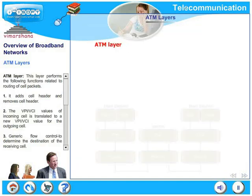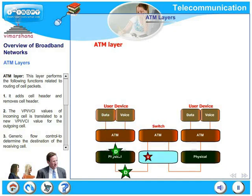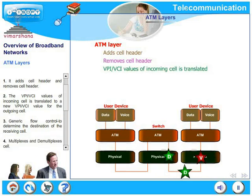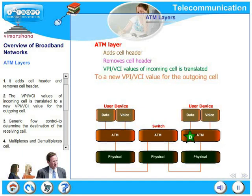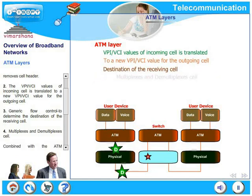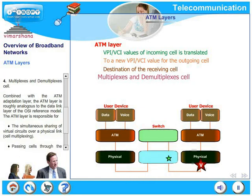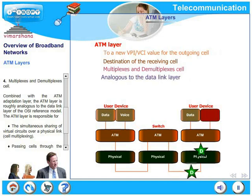We will continue with the ATM layers. The ATM layer performs the following functions related to routing of cell packets: it adds and removes cell headers; the VPI and VCI values of an incoming cell are translated to new VPI and VCI values for the outgoing cell; it controls generic flow to determine the destination of the receiving cell; and it multiplexes and demultiplexes cells. Combined with the ATM adaptation layer, the ATM layer is roughly analogous to the data link layer of the OSI reference model.